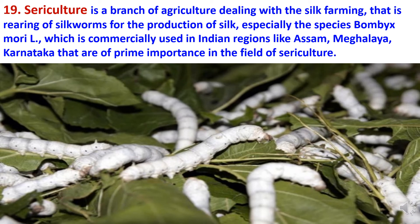The nineteenth branch of agriculture is sericulture. Sericulture is the branch of agriculture dealing with silk farming — that is rearing of silkworms for the production of silk, especially the species Bombyx mori which is commercially used in Indian regions like Assam, Meghalaya and Karnataka, which are of prime importance in the field of sericulture.